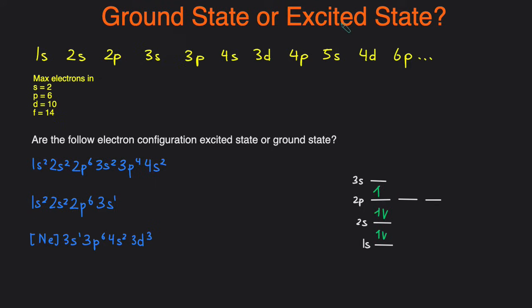Excited state means that one or more electron was excited or bumped up to a higher level so the lower levels weren't completely filled up before you filled in the higher levels. So for example if you had a configuration that looks like this then this would be considered excited state because you can see that the 2s wasn't completely filled before you started filling the 2p.